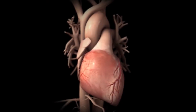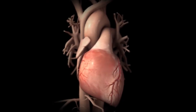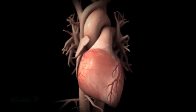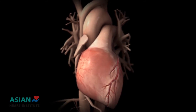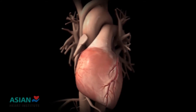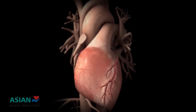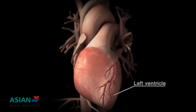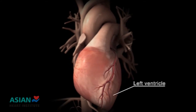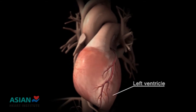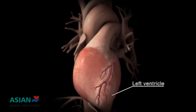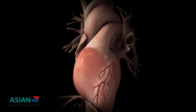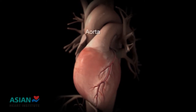Your heart is a muscular organ that pumps blood containing the oxygen and nutrients your body needs. The main pumping chamber of your heart is the left ventricle. When your left ventricle contracts, it sends oxygen-rich blood to your body through a large artery called the aorta.